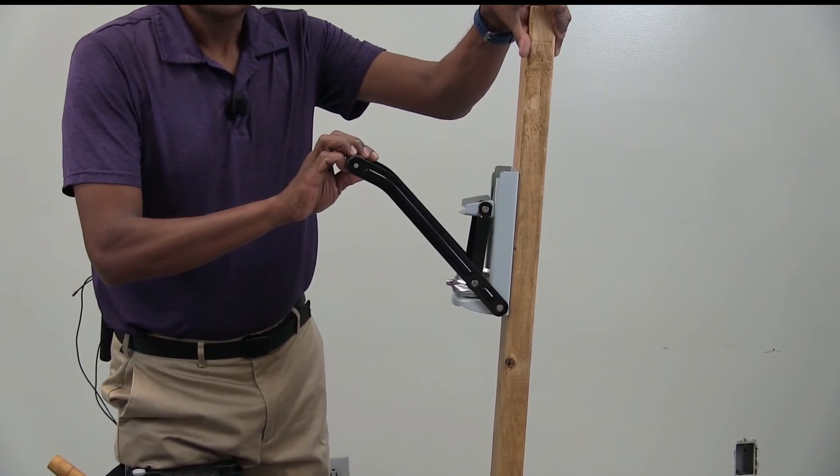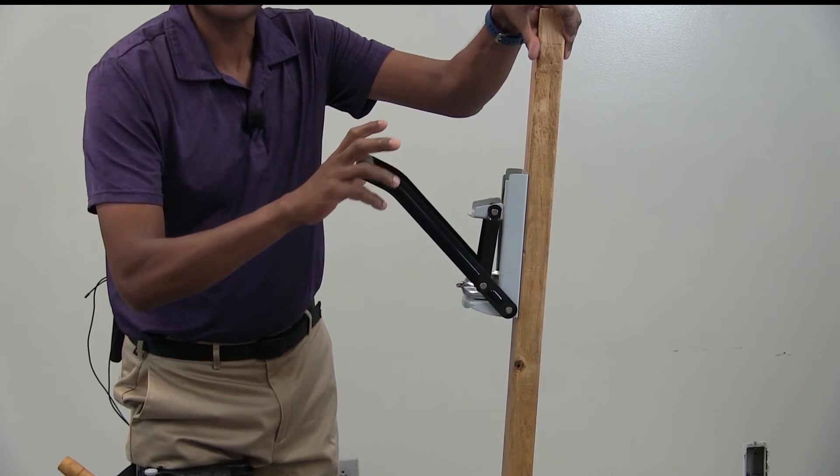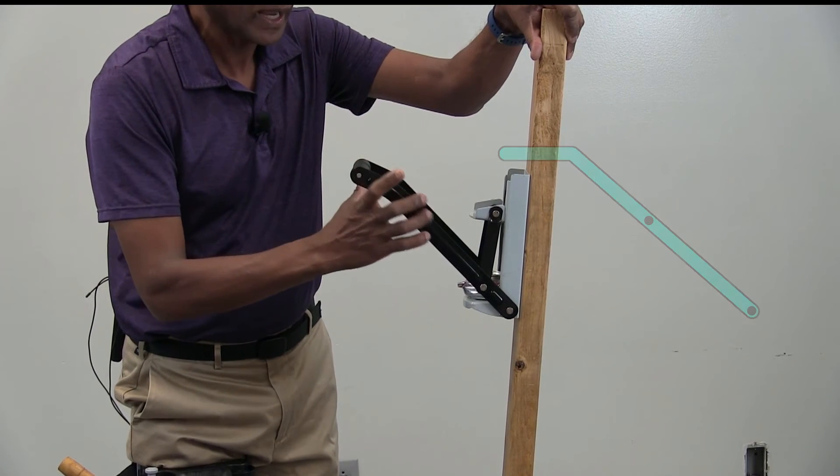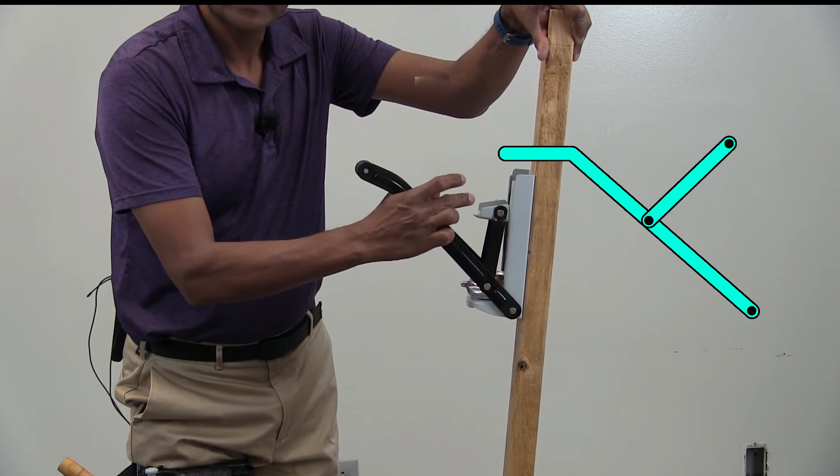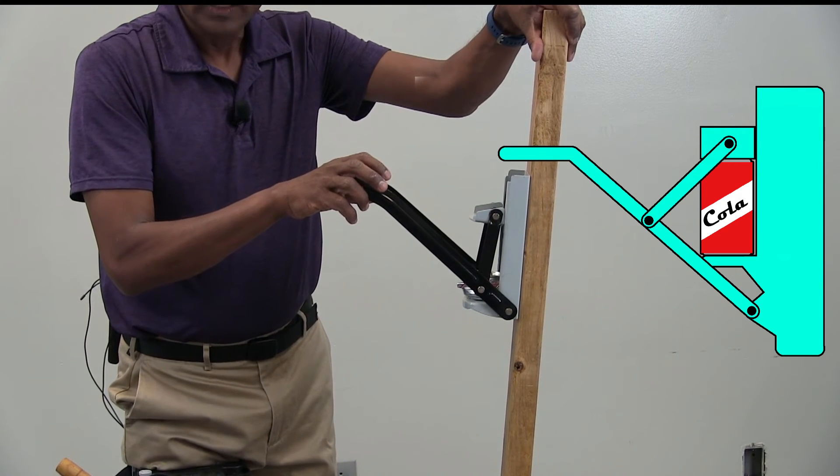In order to do that, first we have to draw the sketch of this entire mechanism. The sketch will include the handle, intermediate link, slider, and the can. So let's draw the sketch first.